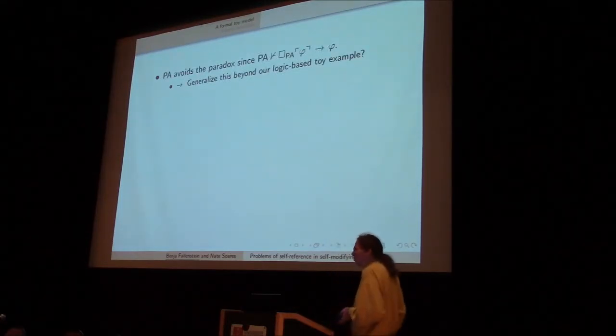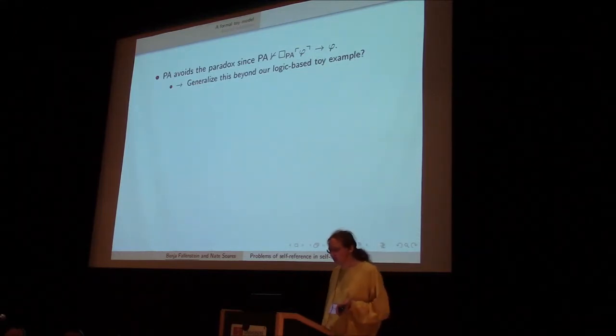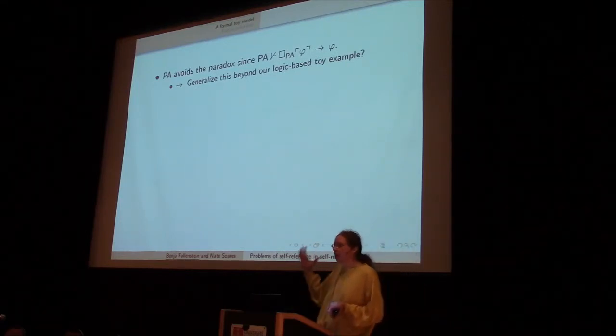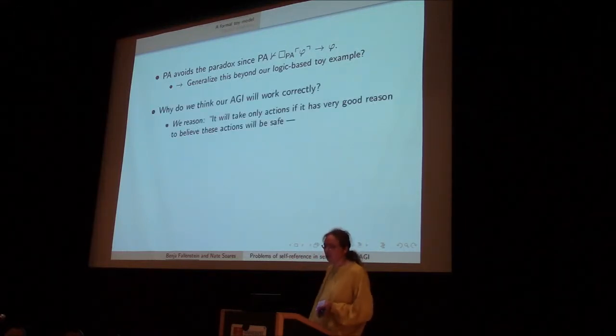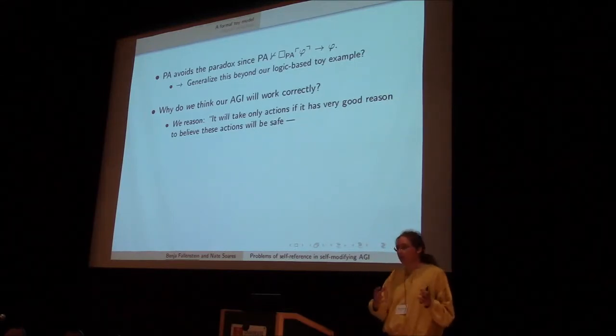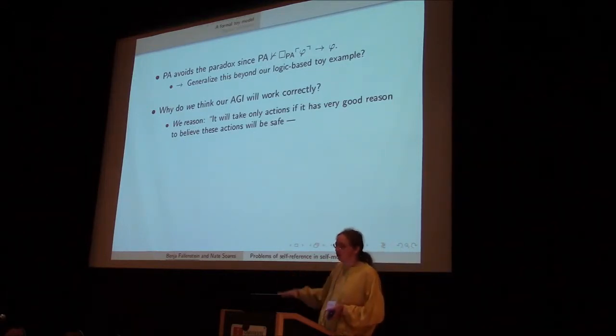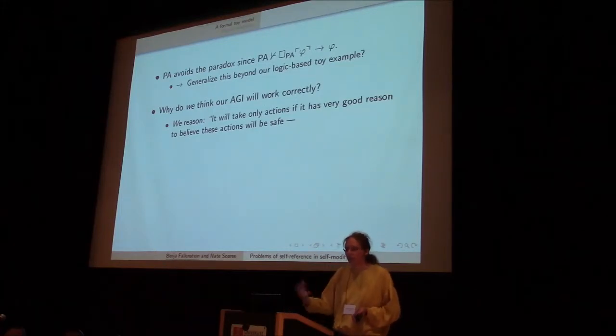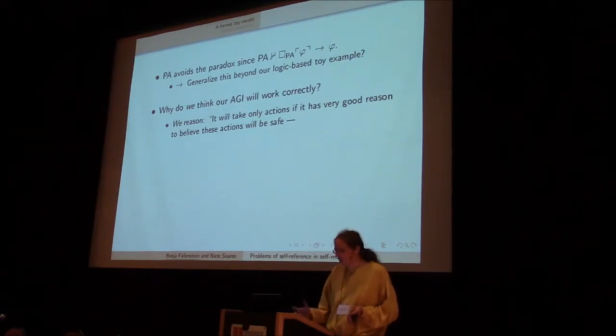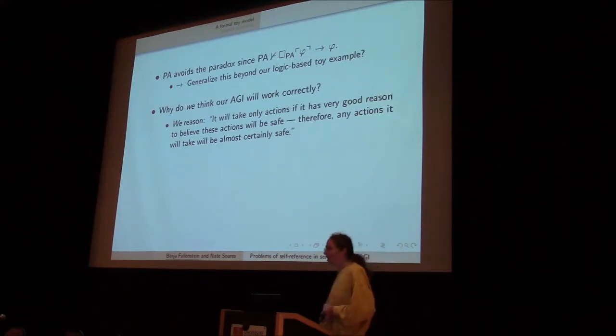So what does this tell us about the general case? What does this tell us about how to avoid this problem in general? Can we generalize this idea and say that in general AGIs shouldn't be able to do this sort of inference? Well, let's think about why we think that our AGI will work correctly. So we've come up with some sort of extremely reliable reasoning, and we know that we'll only take an action if it's gone through this extremely reliable reasoning and concluded that this action is safe in some sense.